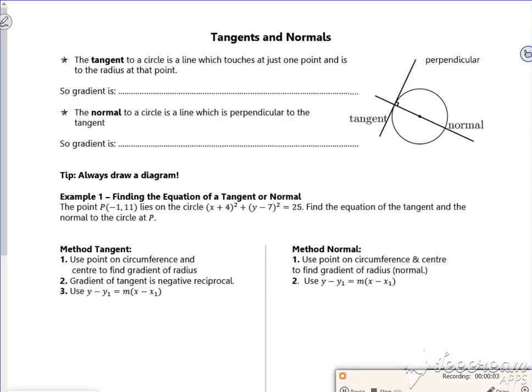Hi everyone, so this is the second lesson of the 2023 pack for circles. Unfortunately I'm still stuck in a room with a five minute video limit, so sorry about that. Right, so it says the tangent to a circle is a line which just touches at one point and is to the radius at that point.